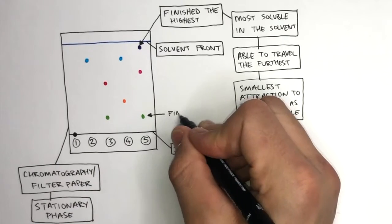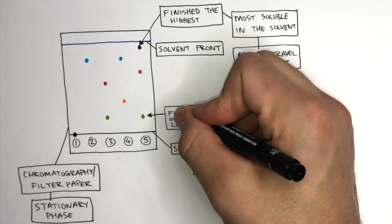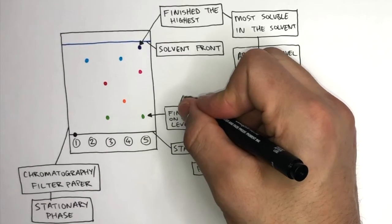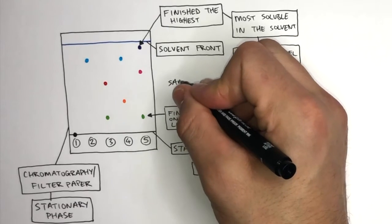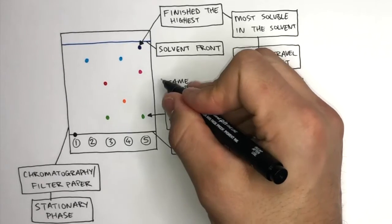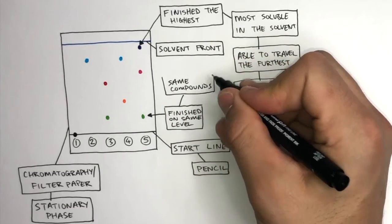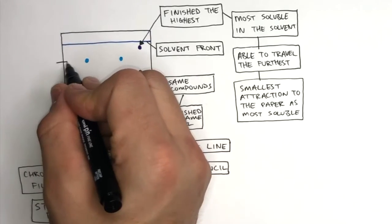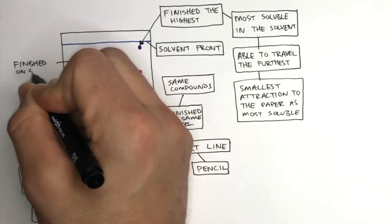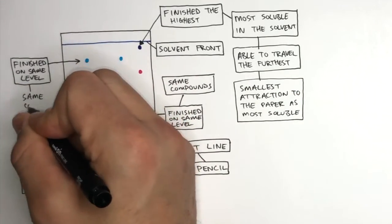These two green compounds finished on the same level. When interpreting chromatograms, if you ever see compounds finishing on the same level, it means they are the same compounds. This is because the same compounds will have the exact same solubility in that particular solvent. These two blue compounds also finished on the same level, so they are also the same compounds.